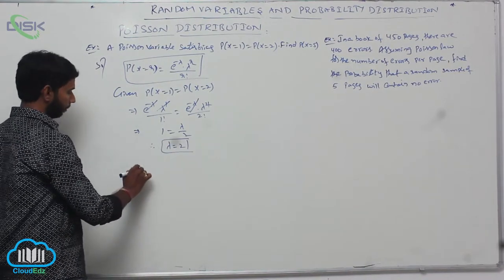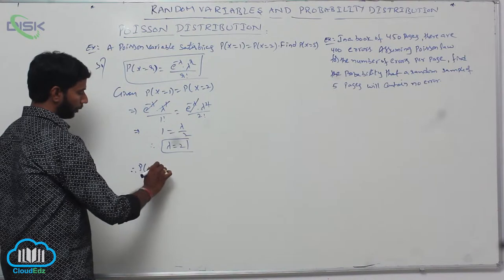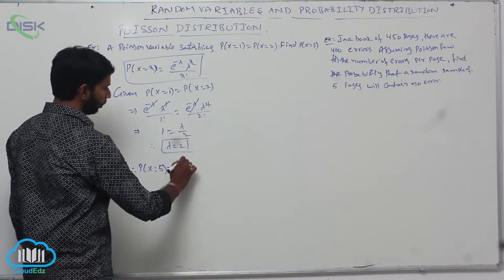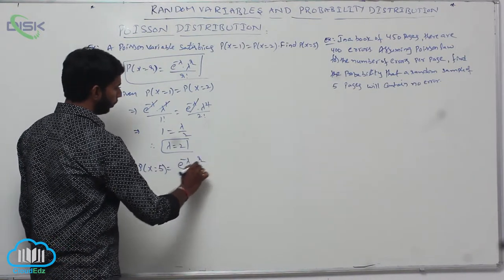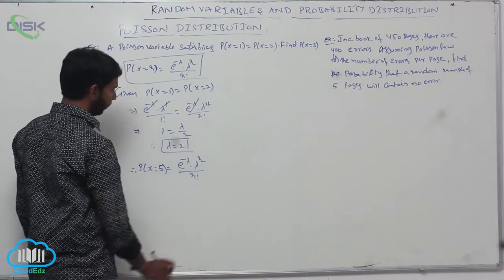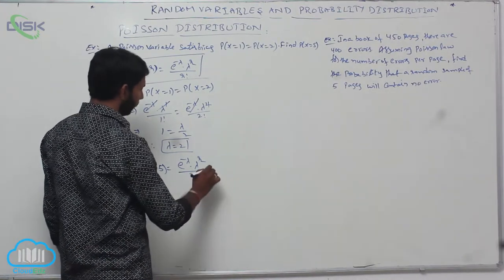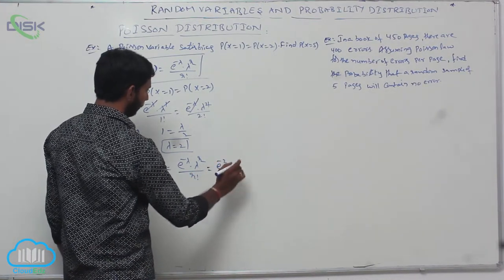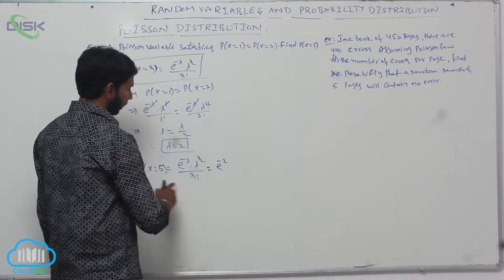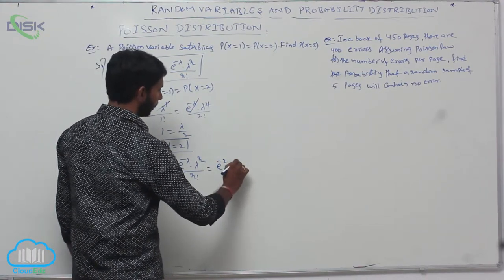Therefore, the required value is P(x=5). It is equal to e power minus lambda into lambda power r by r factorial. Substituting lambda equal to 2 and r equal to 5.